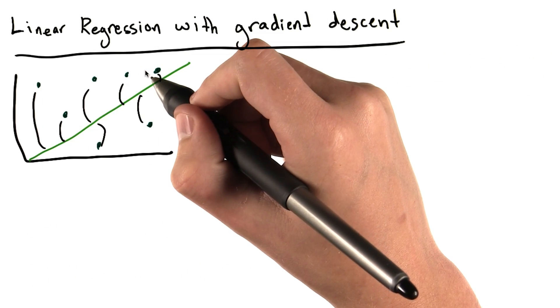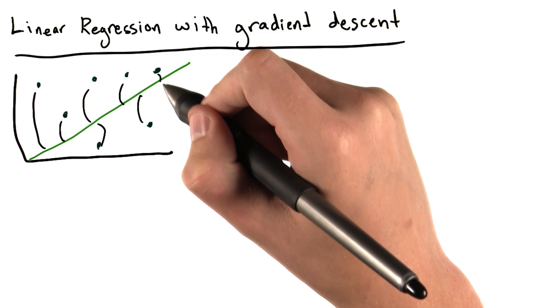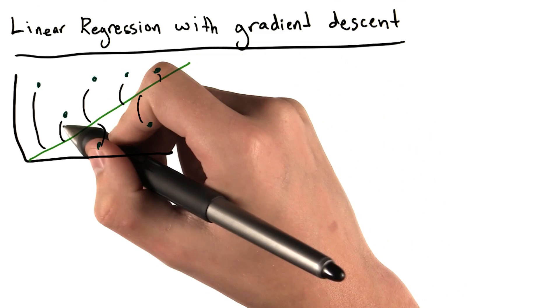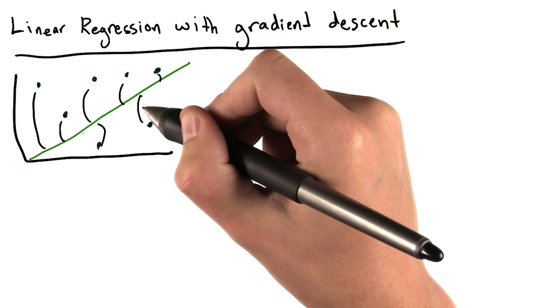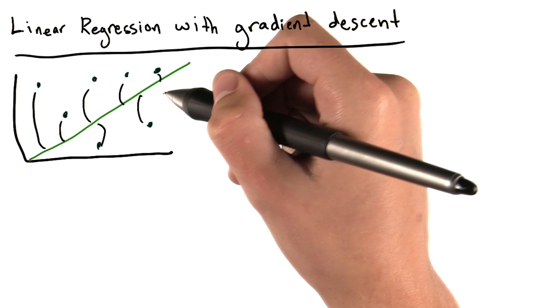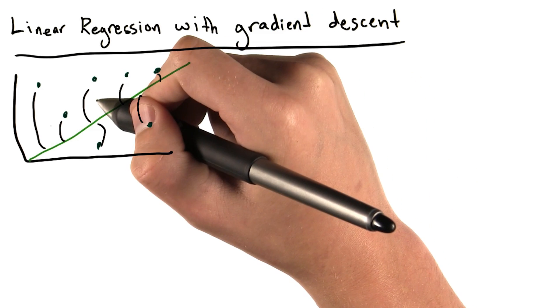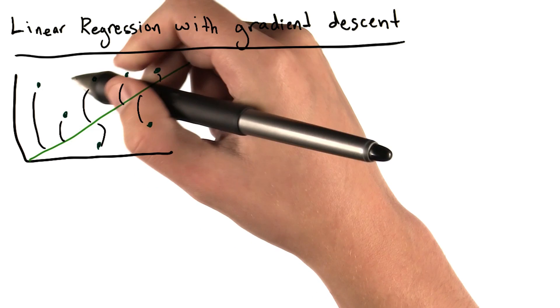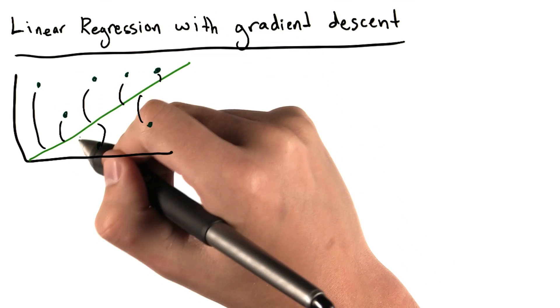In this illustration, the dark blue points represent our observed data points, whereas the green line shows the predicted value of y for every value of x, given the model that we may have created. The best equation is the one that's going to minimize the difference across all data points between our predicted y and our observed y.